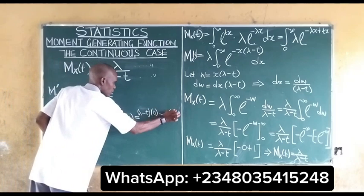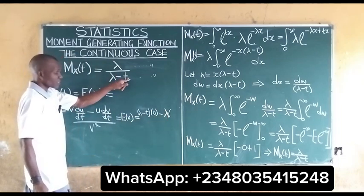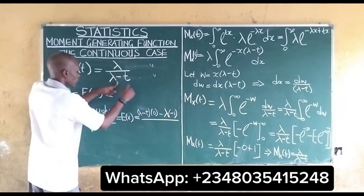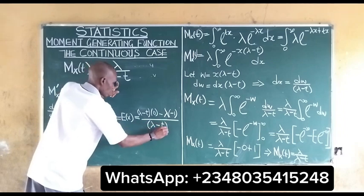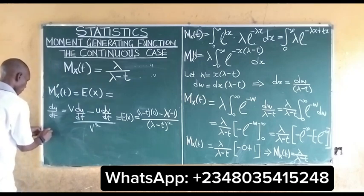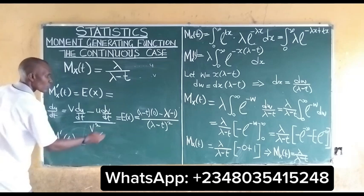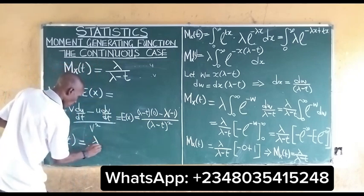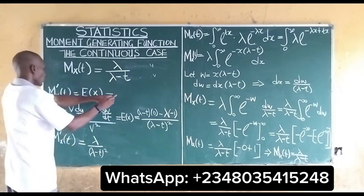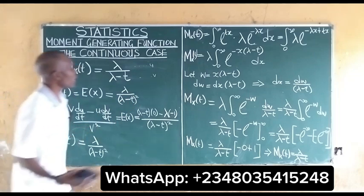Differentiating: du/dt equals 0, and dv/dt equals negative 1. So we get v times 0, minus u times (−1), all over v squared. This simplifies to λ over (λ − t) squared. So our first moment M'(t) equals λ over (λ − t) squared.